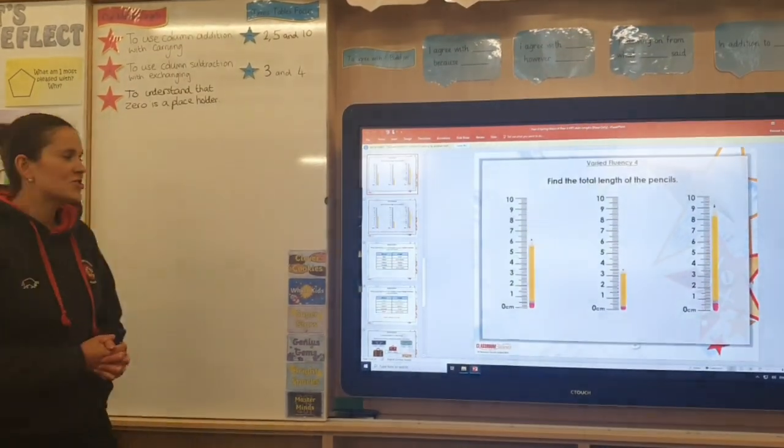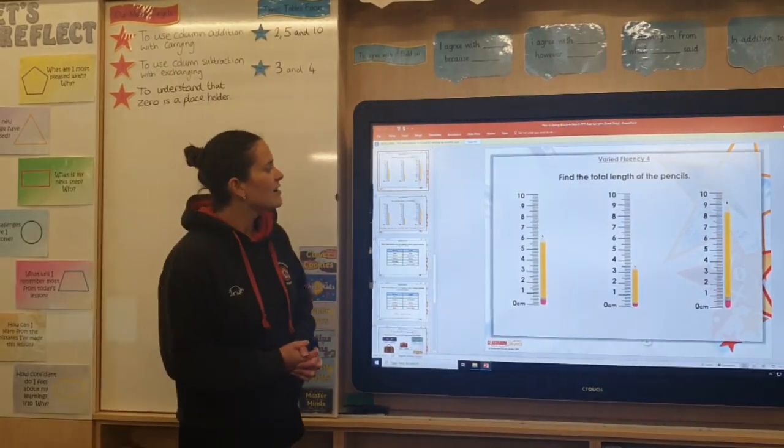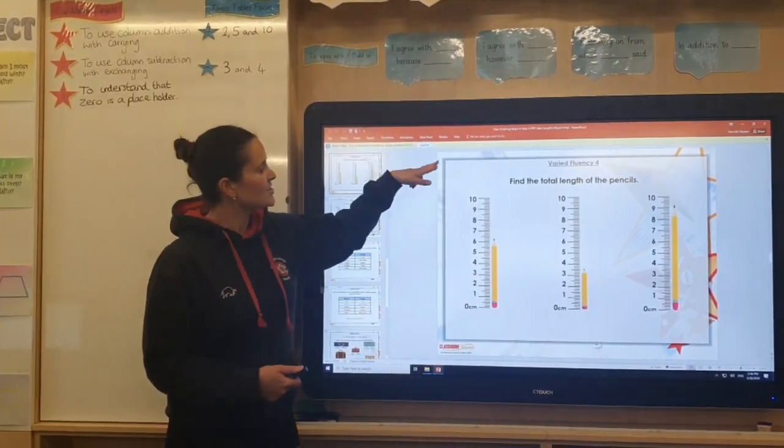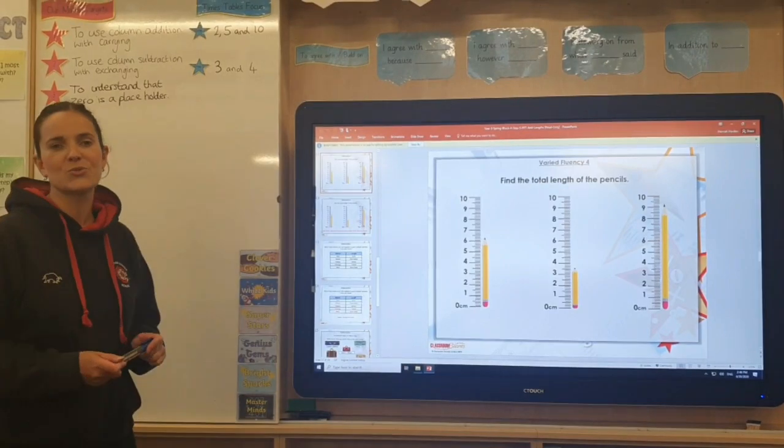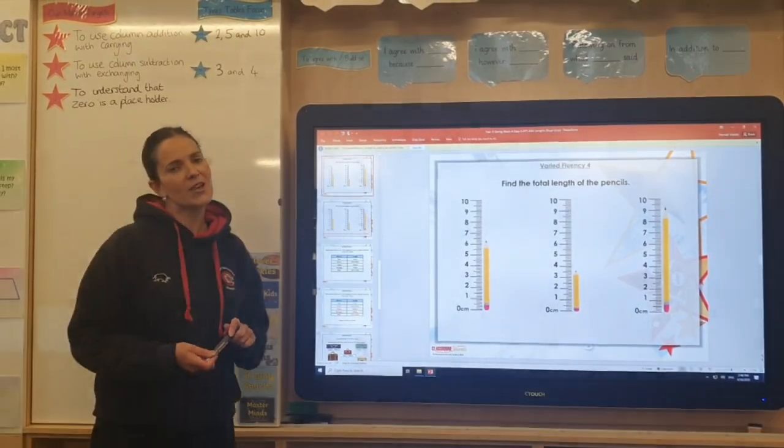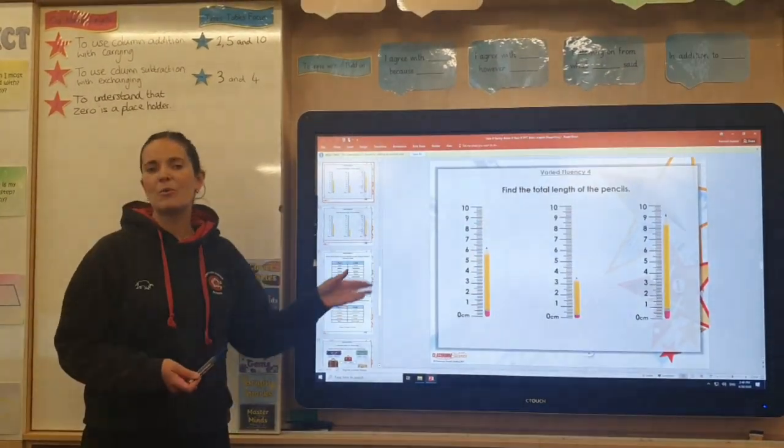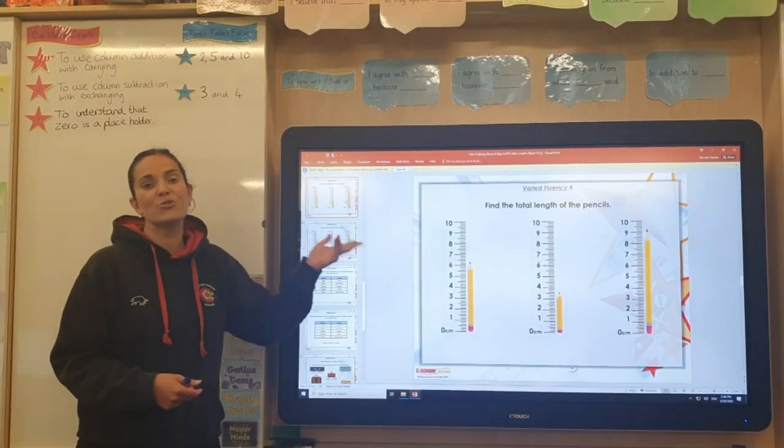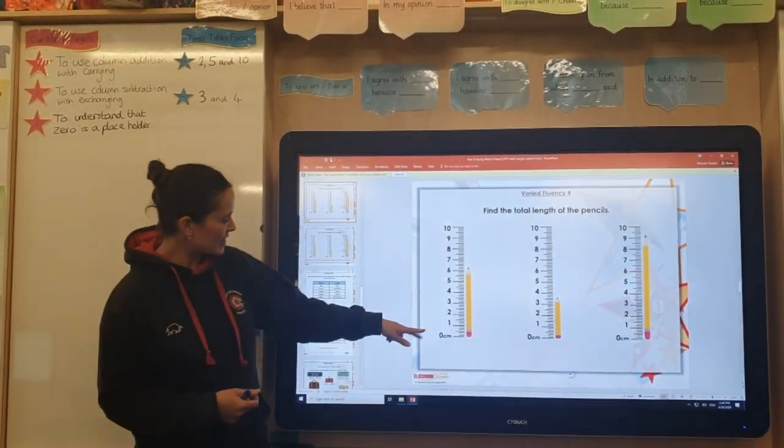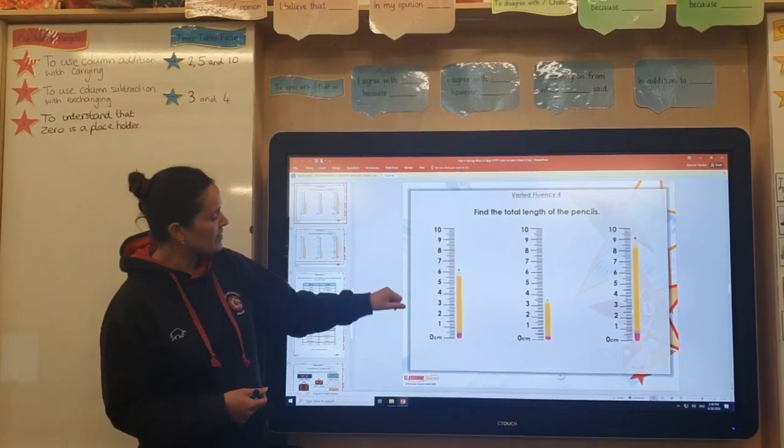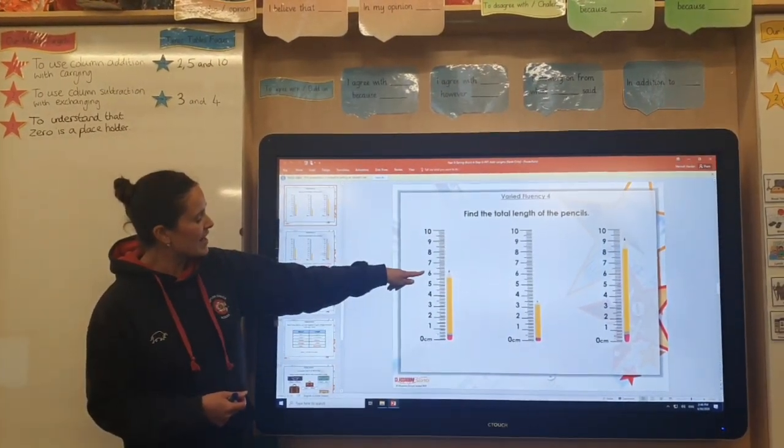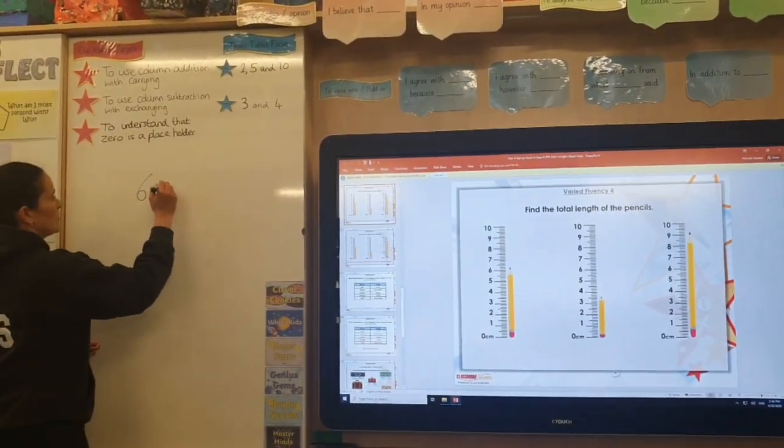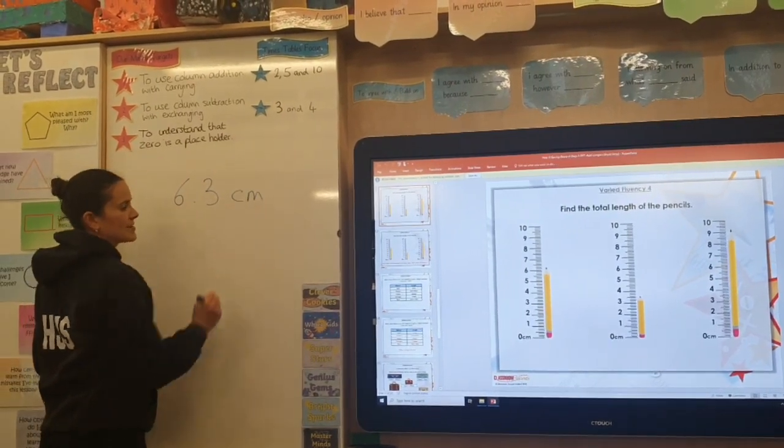This next example of a question looks a little bit different. What we have got here is three rulers. And next to each ruler is a pencil. And the question is asking you to find the total length of the pencils. Now, it might be a bit tricky for you to see this one on your screen, but hopefully when you've got your own ones in front of you, you can read the scales, read the rulers much more easily. This first pencil here is what we need to work out the length of to start with. And I can see I'm up to six whole centimetres there. And then it is three extra little millimetres. So the first pencil would be six point three centimetres.